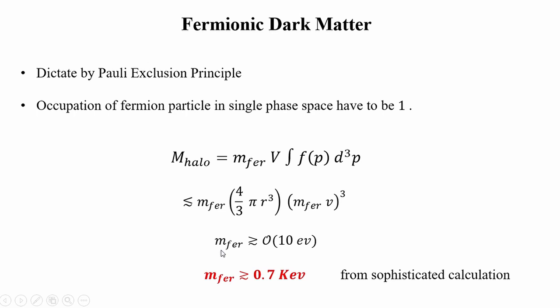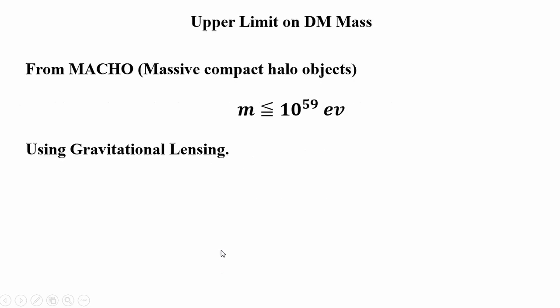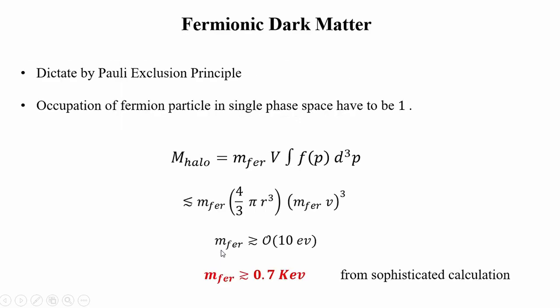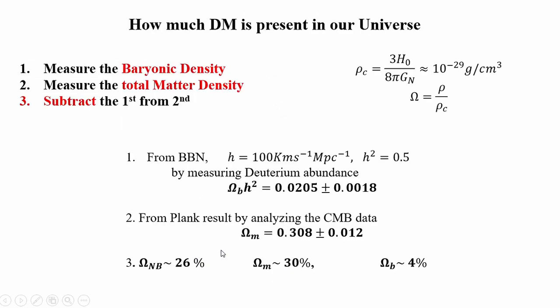So for bosonic dark matter the lower mass limit is 10^(-22) eV, and for fermionic dark matter it is 0.7 keV. This is the minimum mass needed for the dark matter particle. For the upper limit, we can use the gravitational lensing effect and astrophysical objects - just like for MACHOs (Massive Compact Halo Objects) - from which you can determine that dark matter mass cannot exceed approximately 10^59 electron volts. So no dark matter can exist above this and none below the lower limits.